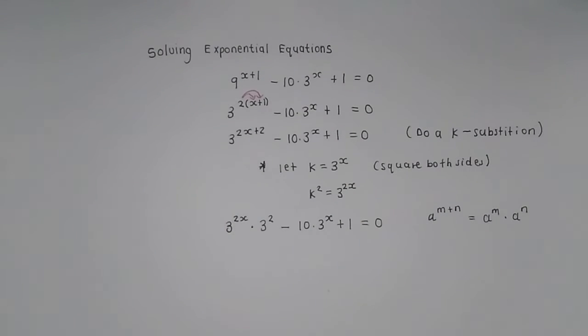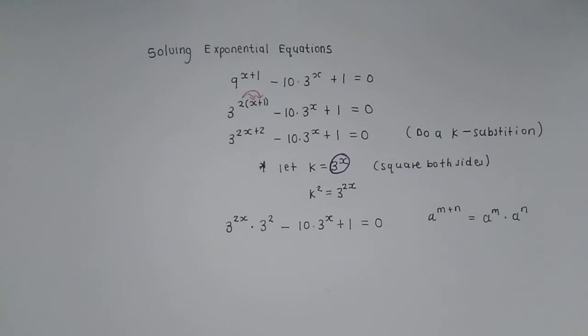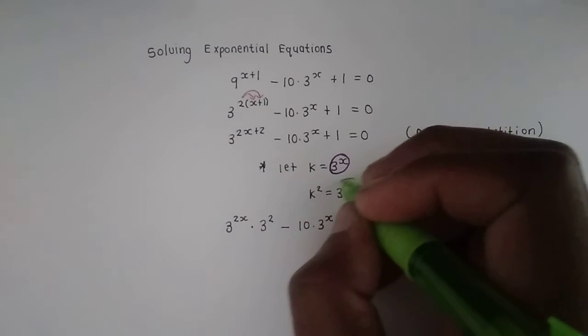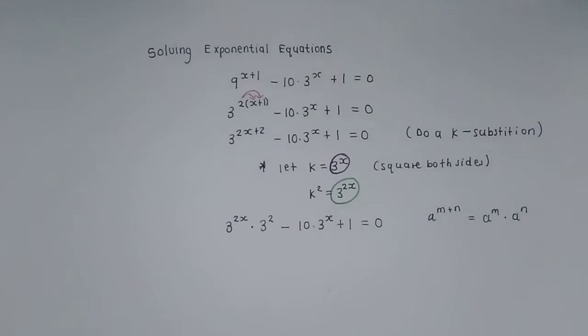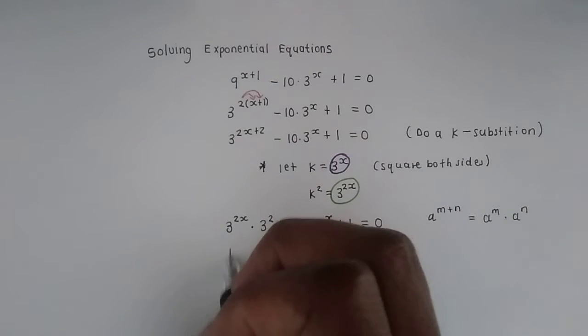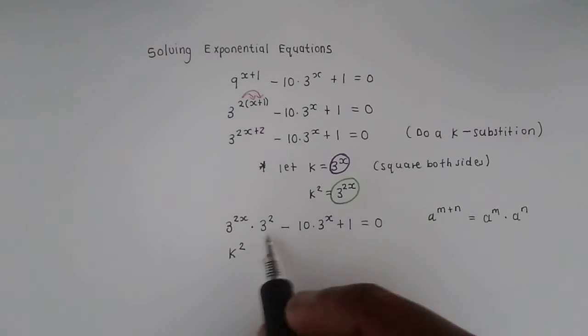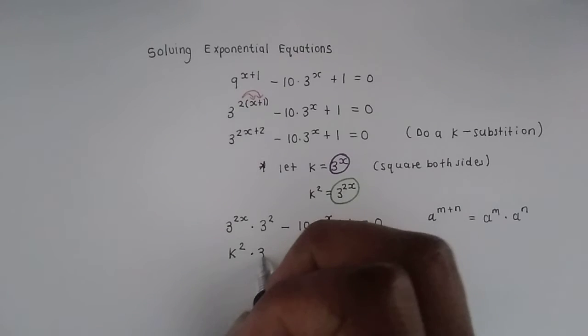So we're going to break that first term into 3 to the exponent 2x times 3 squared. Then we have minus 10 times 3 to the exponent of x plus 1 equals 0. Now we then need to substitute for our k. We're saying that this 3 to the x must become k and the 3 to the exponent 2x must become k squared. So wherever we see this term, we must write k squared. So there it is. We substitute it with k squared.